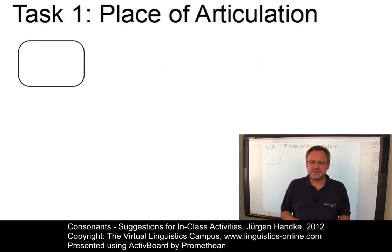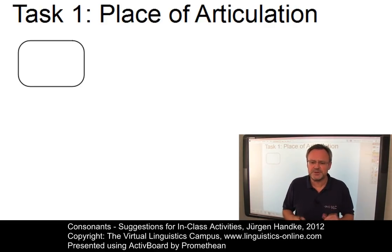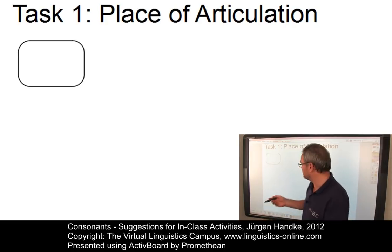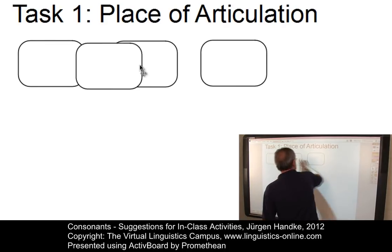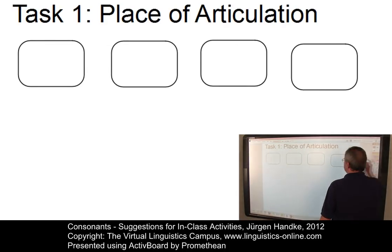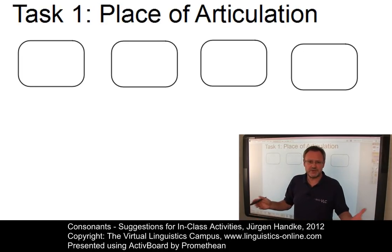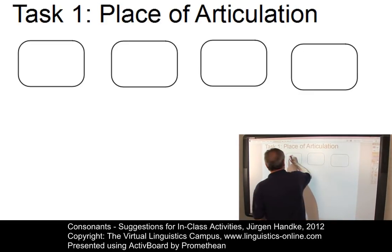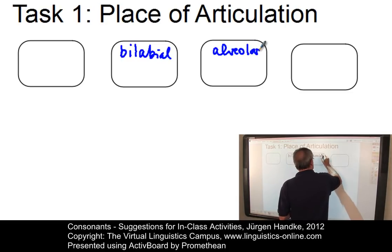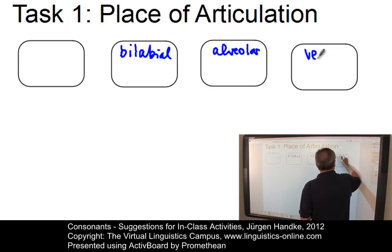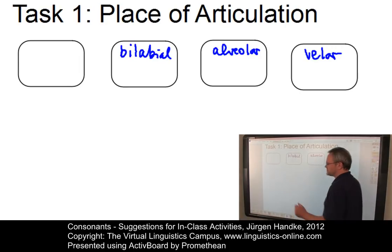The first task is to define the various places of articulation and to associate one consonant with each place. You could define several containers and label them with certain places of articulation — for example, bilabial, alveolar, and velar — to name just three. This labeling can be done by close interaction with the students, who would define each place.